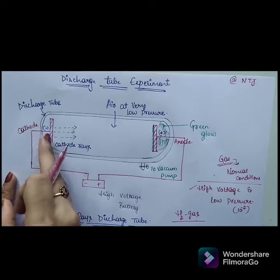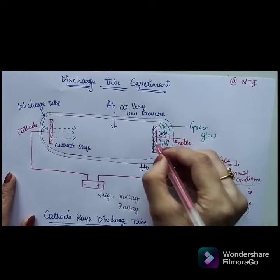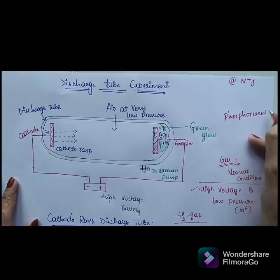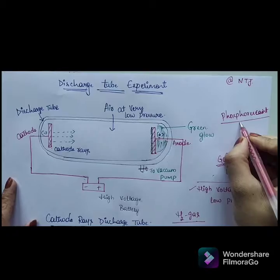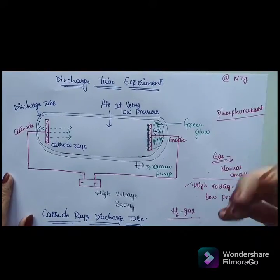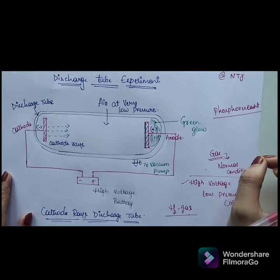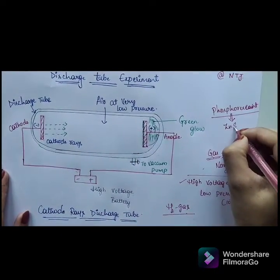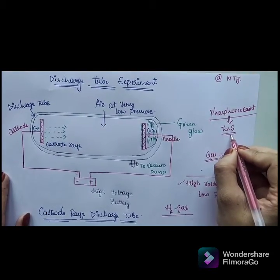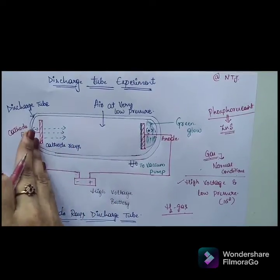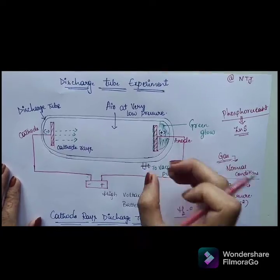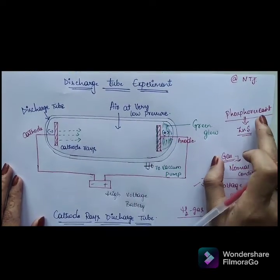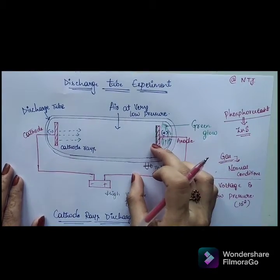In order to confirm what kind of subatomic particles are in that ray moving from the cathode towards the anode, the anode electrode is coated with a phosphorescent material. Phosphorescence means it absorbs a certain amount of radiation and emits light. The phosphorescent material used here is zinc sulfide. This coating helps confirm what kind of particles are passing from the cathode towards the anode.